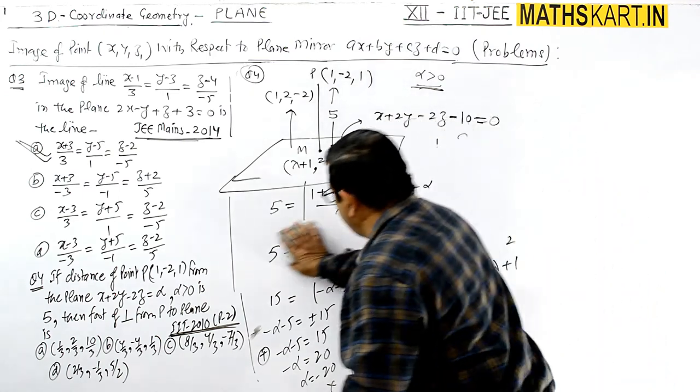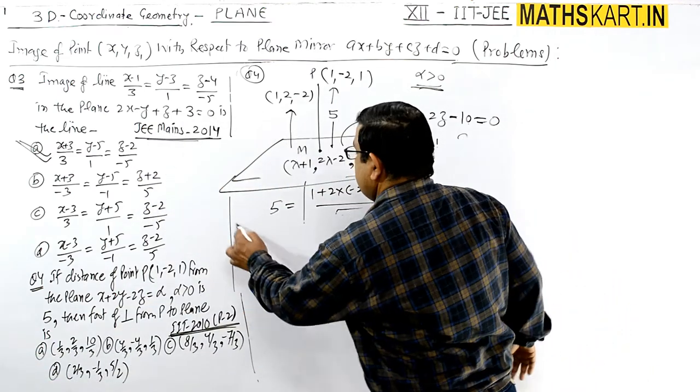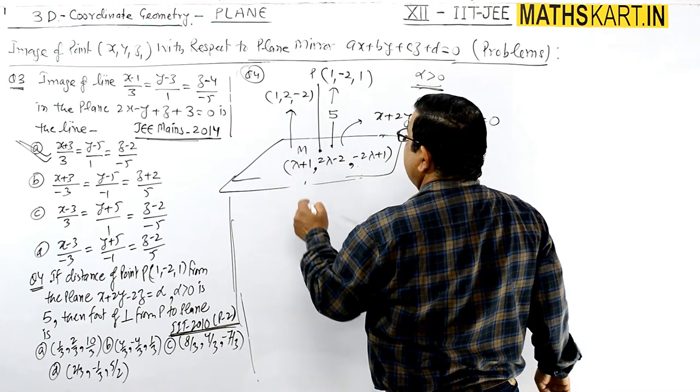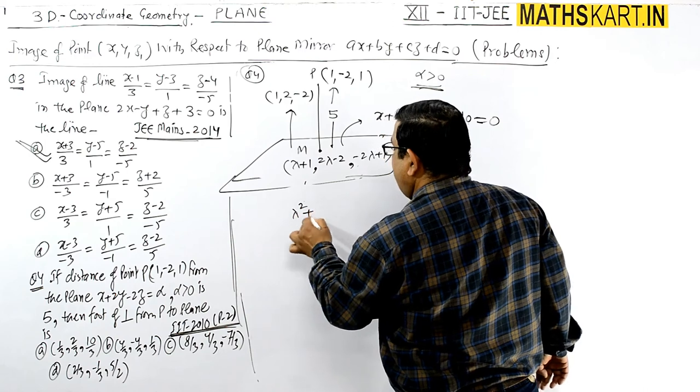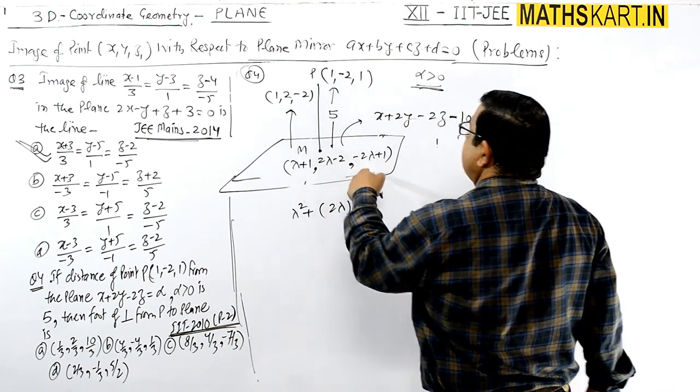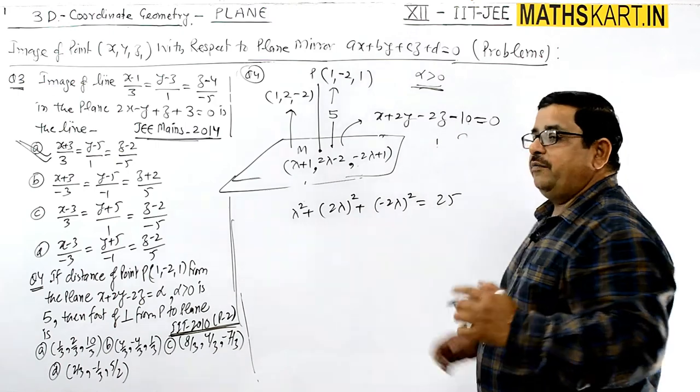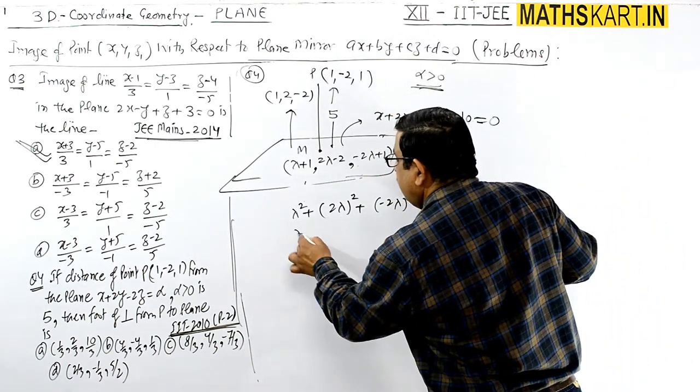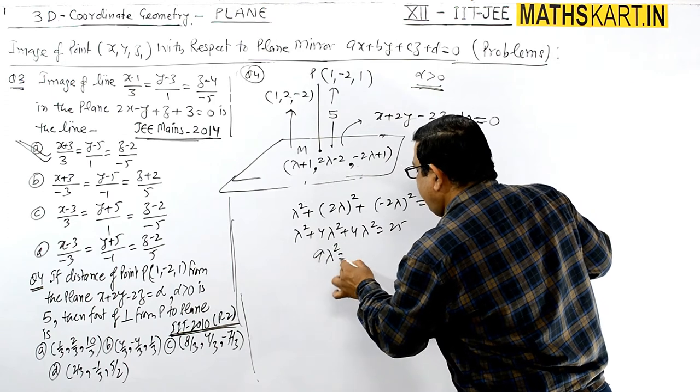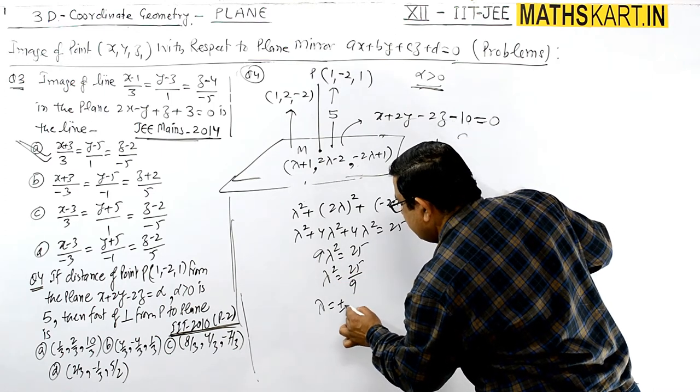Just put the formula here - the distance formula. The distance 5, or 25 = (λ+1-1)² + (2λ-2+2)² + (-2λ+1-1)². So λ² + 4λ² + 4λ² = 25. 9λ² = 25, λ² = 25/9, and λ = ±5/3.